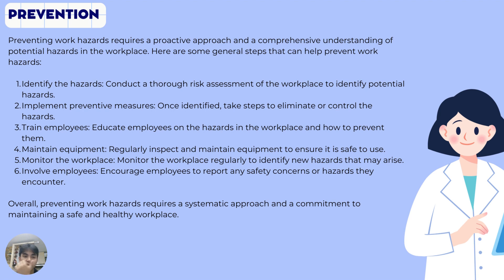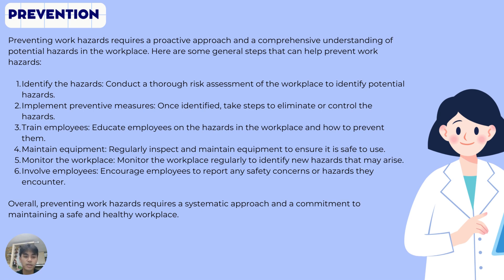For prevention: preventing work hazards requires a proactive approach and a comprehensive understanding of potential hazards in the workplace. Here are some general steps: first, identify the hazards — conduct a thorough risk assessment of the workplace. Second, implement preventive measures — take steps to eliminate or control the hazards. Third, train employees — educate employees on the hazards in the workplace and how to prevent them. Fourth, maintain equipment — regularly inspect and maintain equipment to ensure it is safe to use. Fifth, monitor the workplace regularly to identify new hazards that may arise. Sixth, involve employees — encourage employees to report any safety concerns or hazards they encounter. Overall, preventing work hazards requires a systematic approach and a commitment to maintaining a safe and healthy workplace.